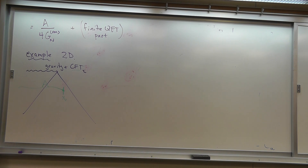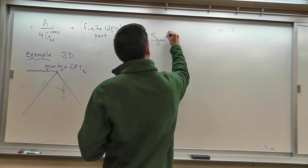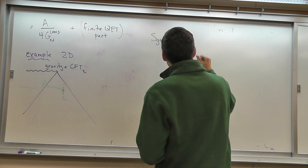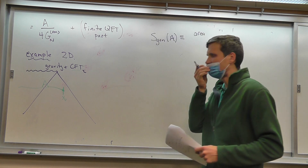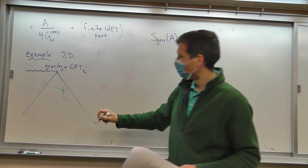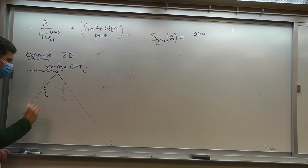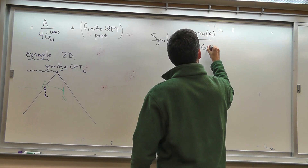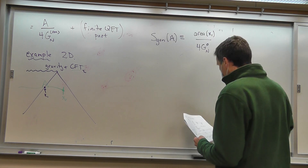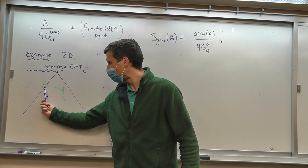We're going to calculate the generalized entropy of this region — let's call this whole region A. The generalized entropy of region A is defined to be the area of all the black holes in region A. In this case there's one black hole, so let's call this point x1. It's the area of the point x1 over 4G_Newton bare, plus the von Neumann entropy of the quantum fields that are in region A but outside the black hole.